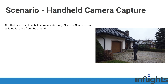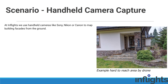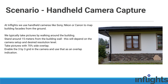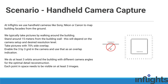At inflights, we use handheld cameras like Sony, Nikon, or Canon to map building facades from the ground with greater precision and to reach inaccessible areas that we couldn't reach with a drone. We typically take multiple pictures by walking around the building. The basic workflow is to stand around 15 meters from the building wall, depending on the camera setup and desired resolution level. Take pictures with 70% side overlap. This is a fully manual process, so calculating overlap is a bit different — you can enable a 3x3 grid in the camera settings and use it as an overlap indication.